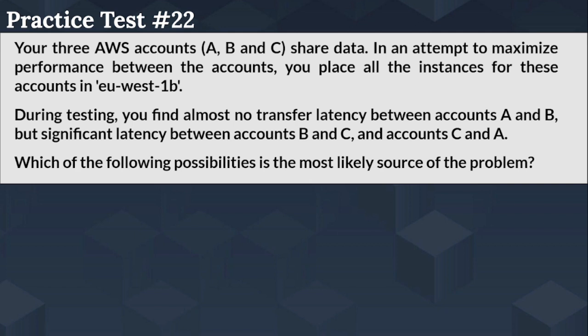In an attempt to maximize performance between the accounts, you place all the instances for these accounts in EU-West-1B. During testing, you find almost no transfer latency between accounts A and B, but significant latency between accounts B and C, and accounts C and A. Which of the following possibilities is the most likely source of the problem?